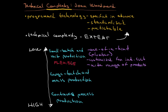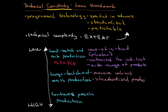Moving on to large batch and mass production — here we are dealing with large factories producing massive volumes of standardized products. The biggest advantage is that we can save costs, and thanks to those savings we can offer a lower price for our product.